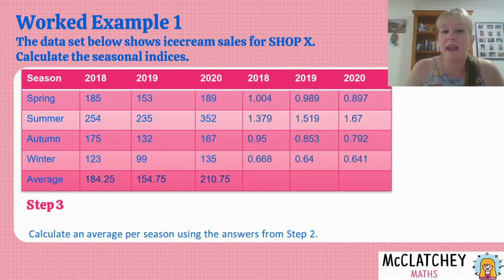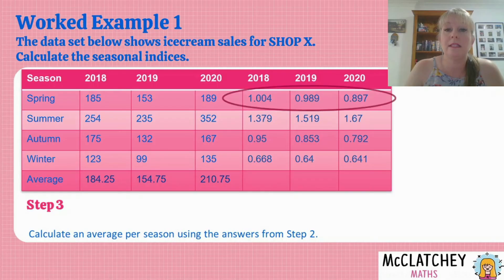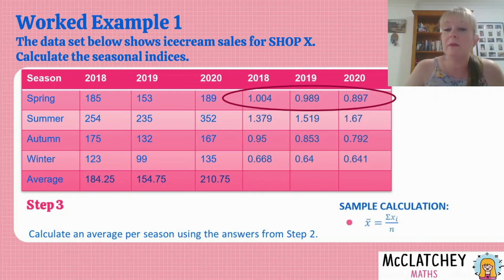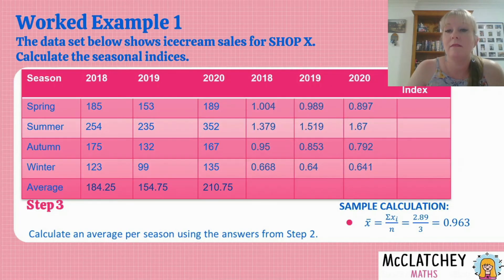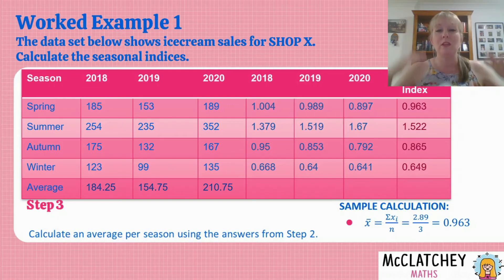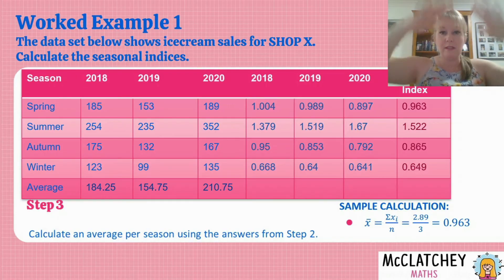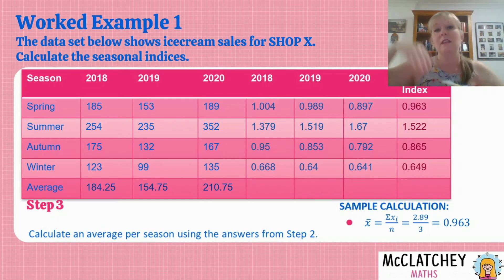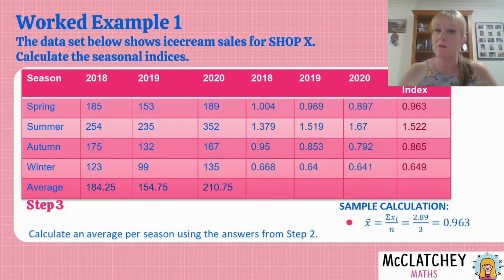Now we're going to calculate the average per season — this is how we calculate our seasonal indices. We take one season at a time. Looking at spring for example, we now have three numbers, one for each year, and we take the average of those. With a sample calculation I find the mean of those three and arrive at 0.963. That is my seasonal index for spring. I repeat the same process for the rest. A good way to remember it: if you've got your years in columns, work down first then across — average, then divide, then average again. To work backwards from a seasonal index, you would multiply rather than divide.